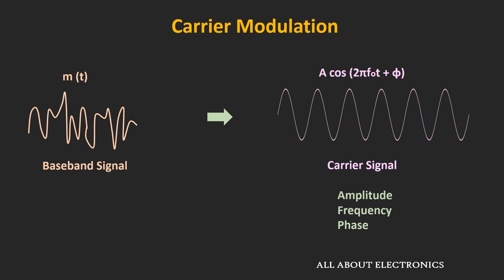In carrier modulation, any of the three basic properties of the carrier signal — amplitude, frequency, and phase — is changed according to the baseband signal. Particularly, in Amplitude Modulation, the amplitude of the carrier signal is changed according to the message signal.